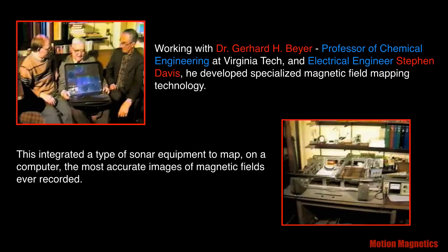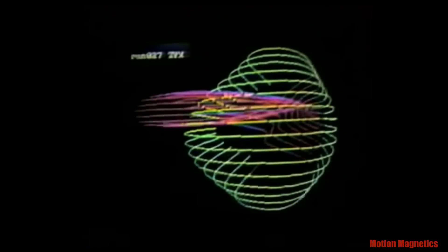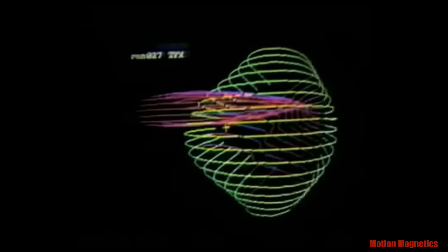This integrated a type of sonar equipment to map, on a computer, the most accurate images of magnetic fields ever recorded. This is one of the images they recorded of a permanent magnet's field. It clearly demonstrates the magnetic spin vortexes.